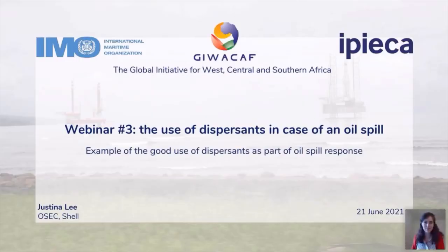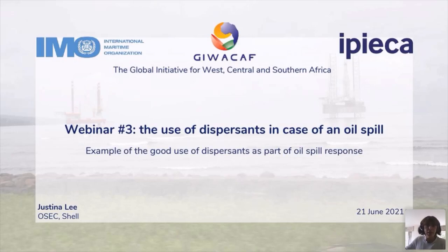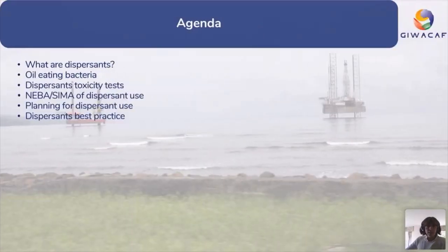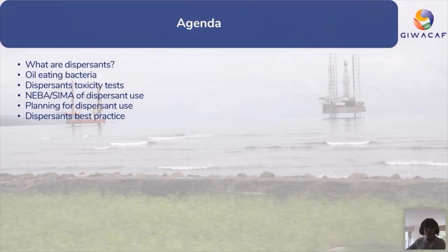Thank you Ken. Now for the second presentation from Justina Lee. This section will look at misconceptions about dispersant toxicity and an introduction to the best way to plan for using dispersants. Dispersants, as Ken explained, break the oil slick on the surface into tiny droplets no bigger than a human hair in the top 5 to 10 meters of the water column. But why do we want this? It's all to do with bacteria — specifically oil-eating bacteria.